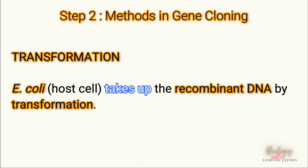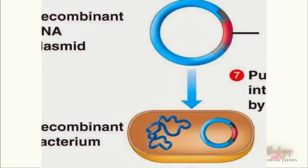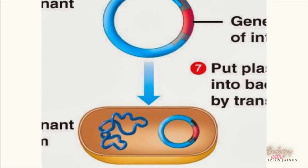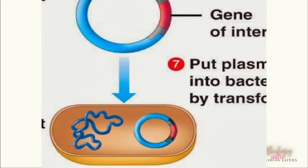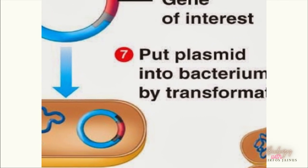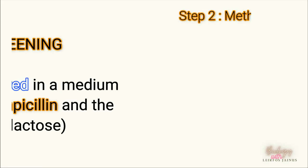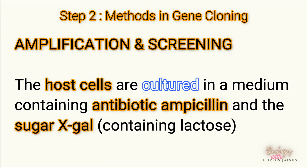The following step is transformation, where the recombinant plasmid is introduced into the host cells, known as E. coli. After transformation, the next step is amplification, followed by screening.